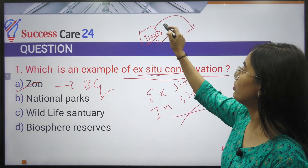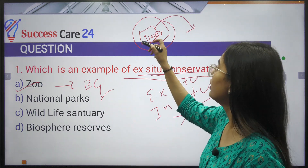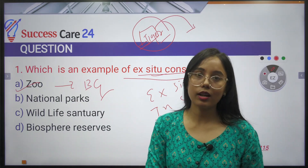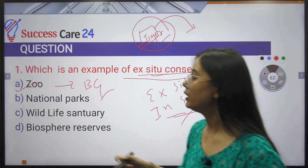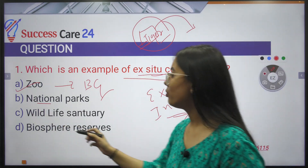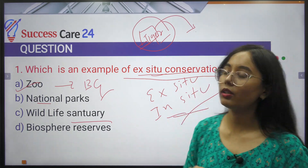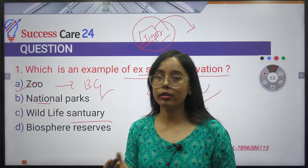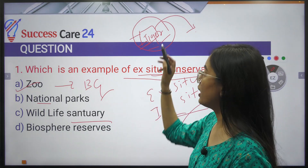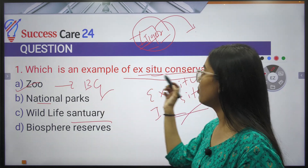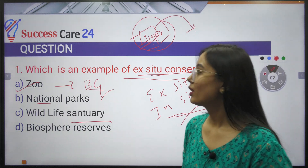In-situ conservation means the species remains in its natural environment and protection is provided there. Examples of in-situ conservation include national parks, wildlife sanctuaries, and biosphere reserves. So zoo and botanical gardens are examples of ex-situ conservation.